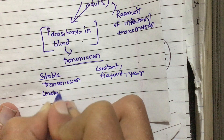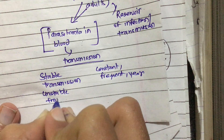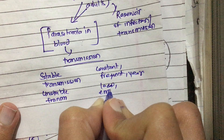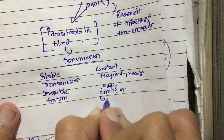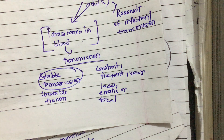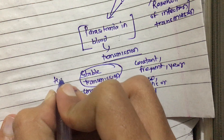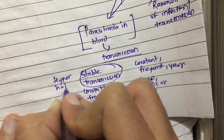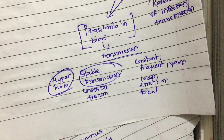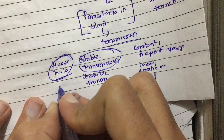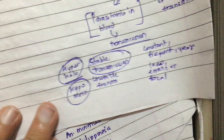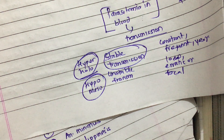Unstable transmission means low, erratic, or focal transmission. Stable transmission — malaria throughout the year — occurs mostly in hyper-endemic and holo-endemic areas, whereas unstable transmission, occurring only during certain seasons, occurs in hypo-endemic and meso-endemic areas.